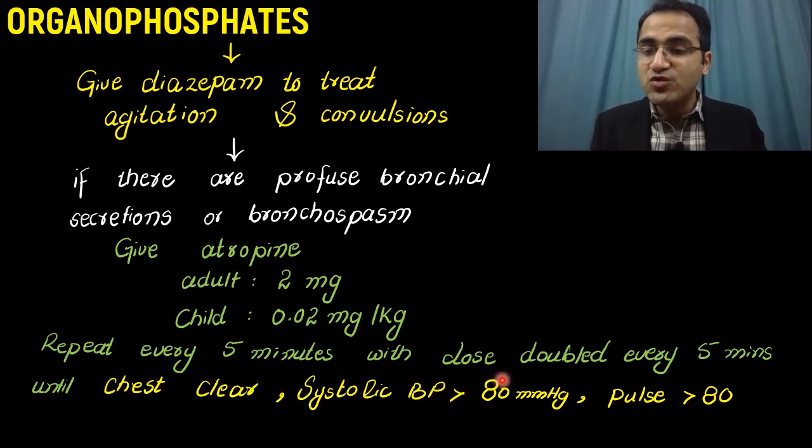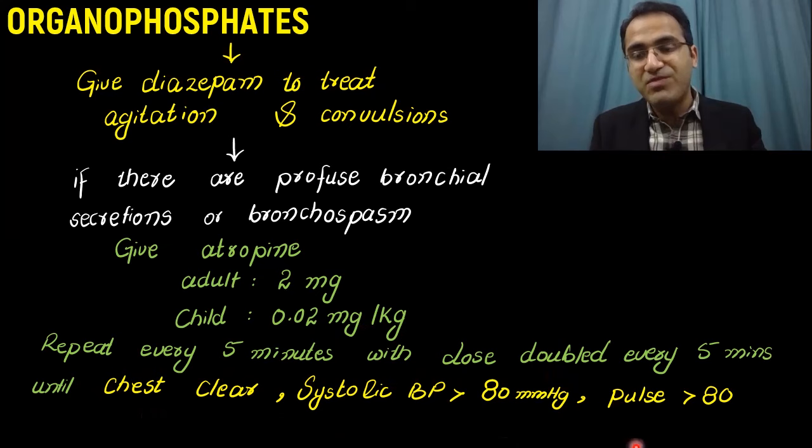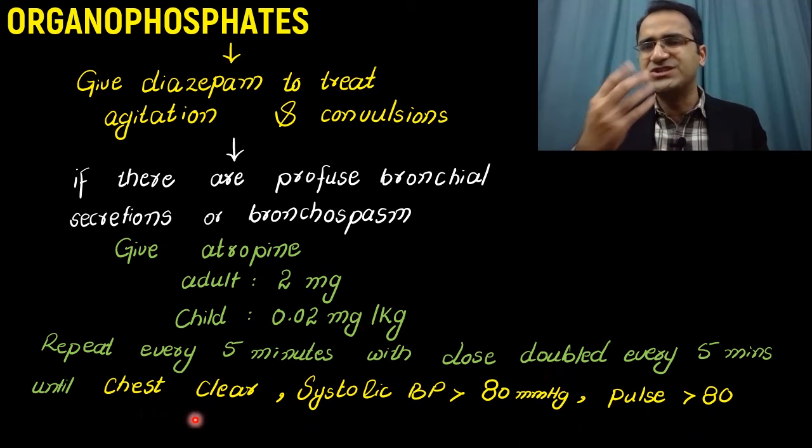You repeat it every five minutes with dose doubled every five times until the chest is clear or the systolic blood pressure is greater than 80 mm of Hg or the pulse is greater than 80. Because parasympathetic stimulation would result in bradycardia, hypotension and increased airway secretions.